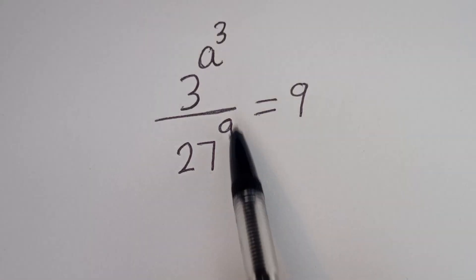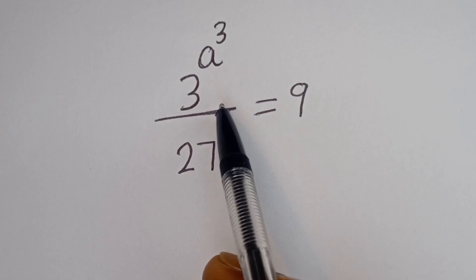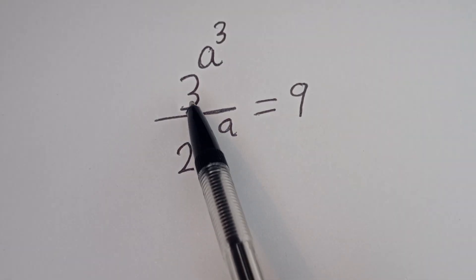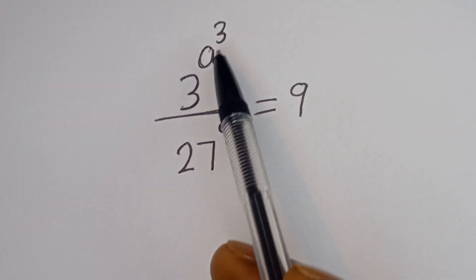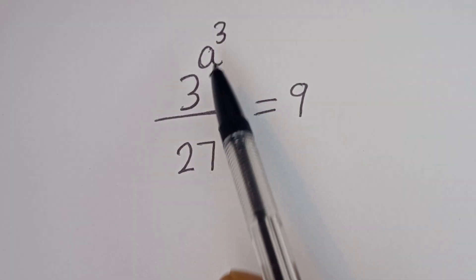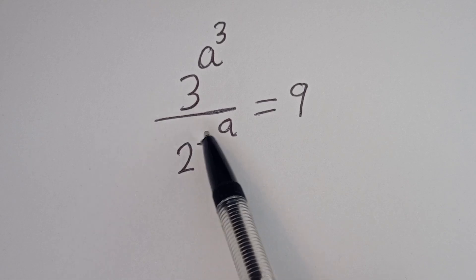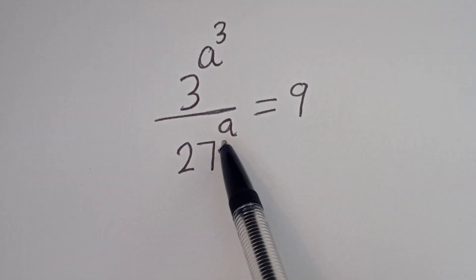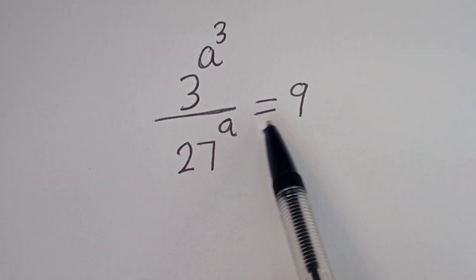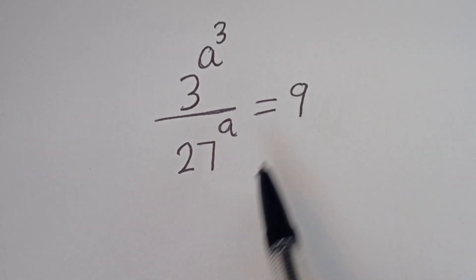Hello. How to solve for A in this equation: 3 to the power of A to the power of 3, divided by 27 to the power of A, is equal to 9.